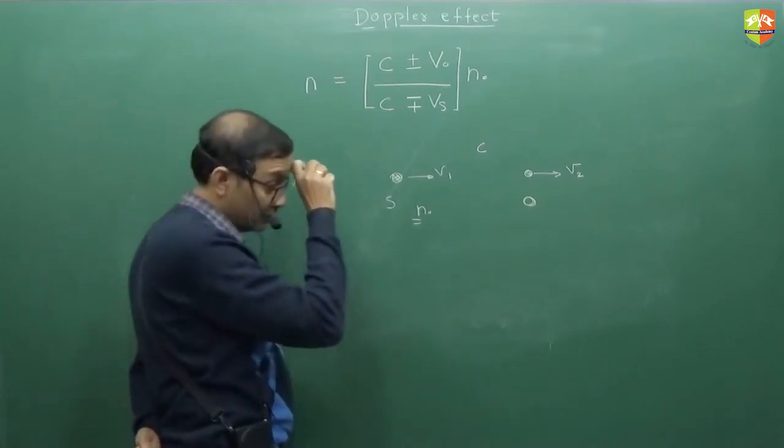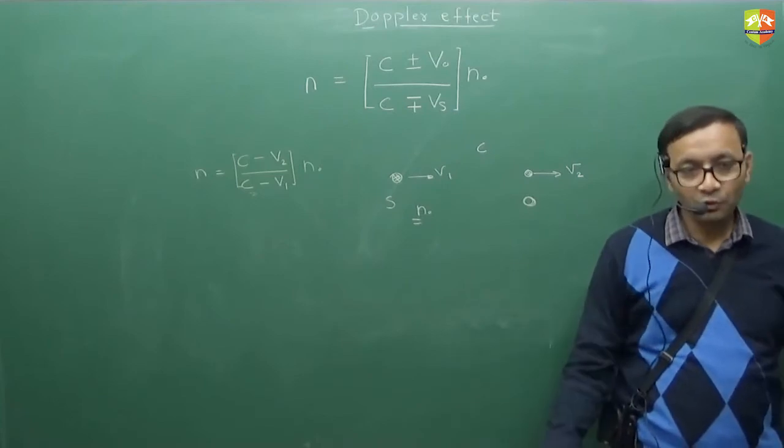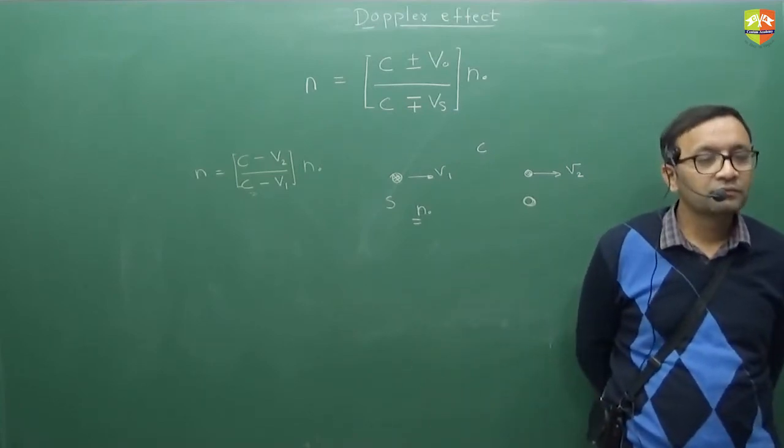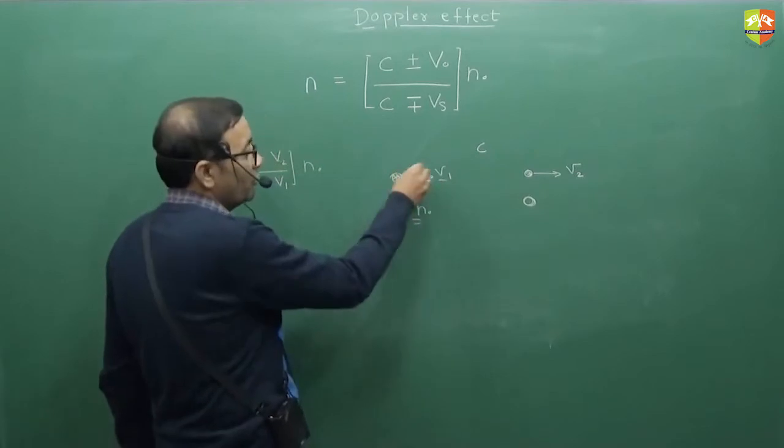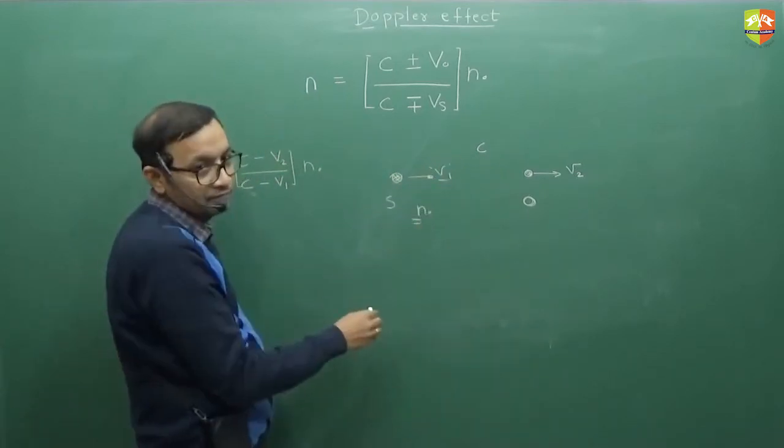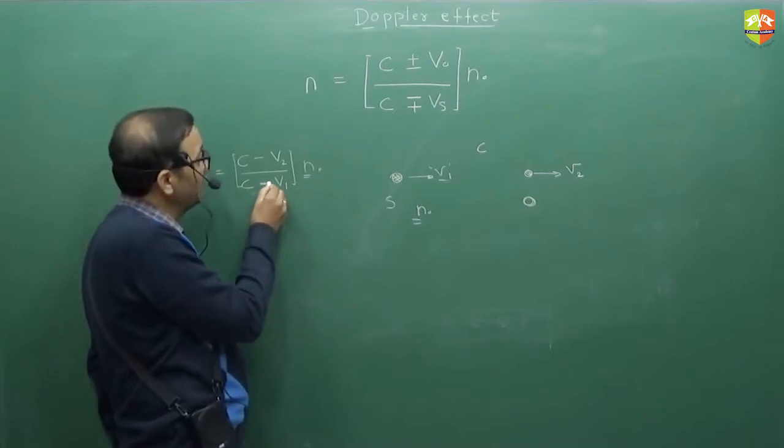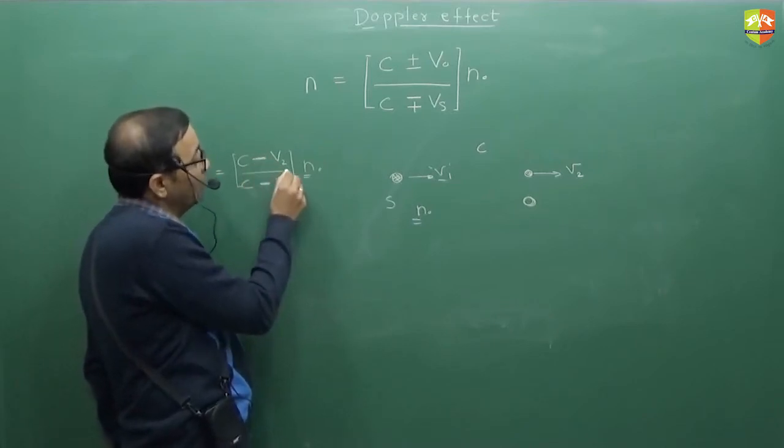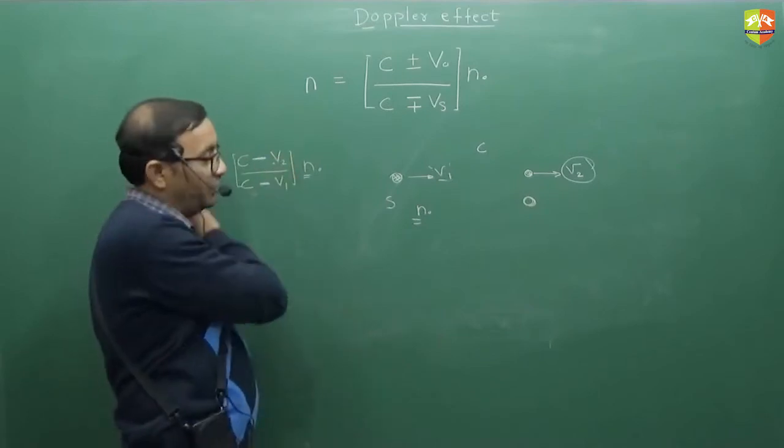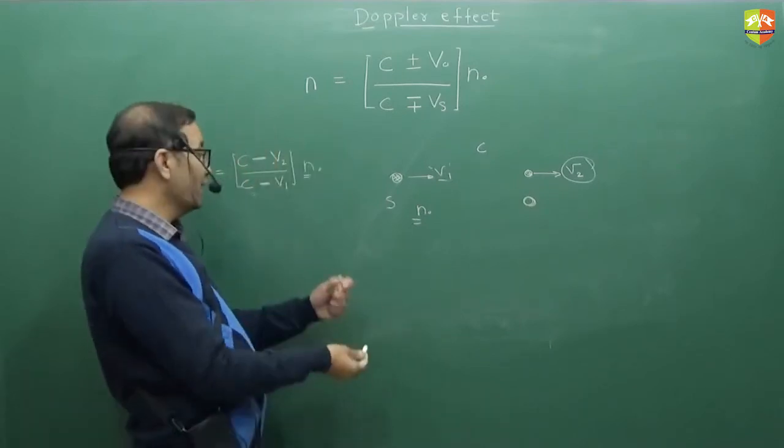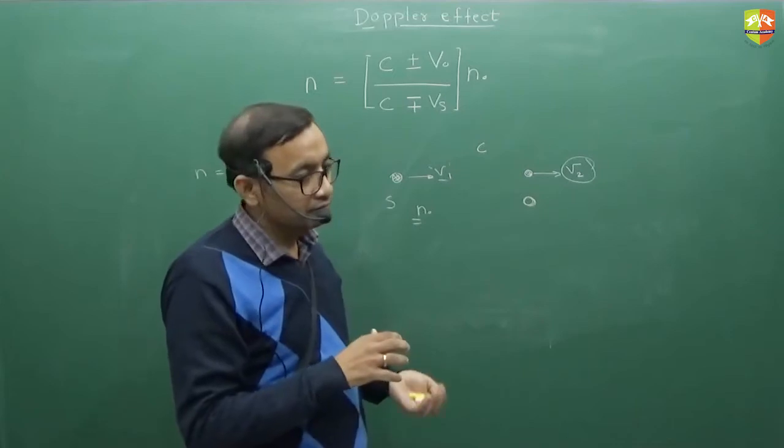c minus v2 times n0. Source is going towards the observer. Frequency should increase because of v1. It comes in denominator, so denominator will decrease so that n0 increases. That's a minus here. And it will be minus in the numerator also. Because of that v2 which is observer, frequency should decrease. So you will decrease the numerator so that it decreases. And you will decrease the denominator also so that it increases. So it tries to compensate each other.